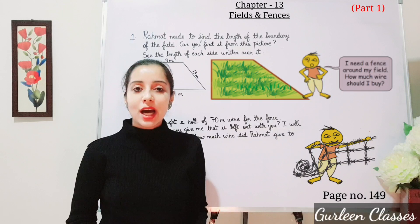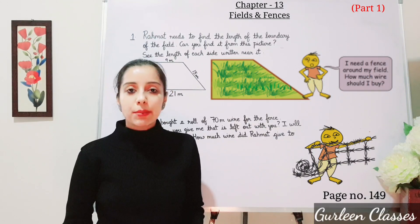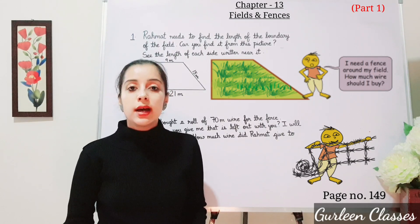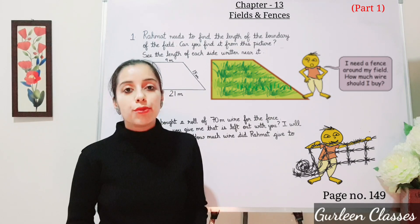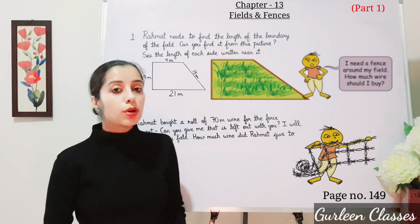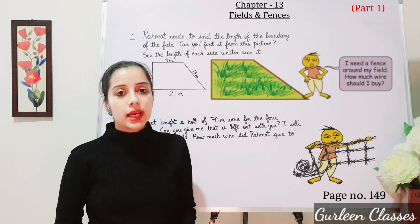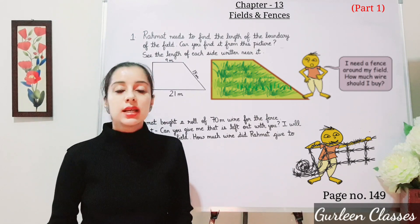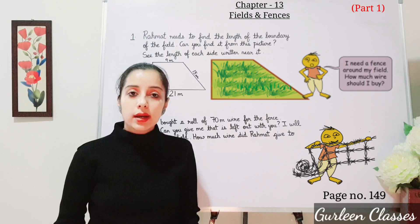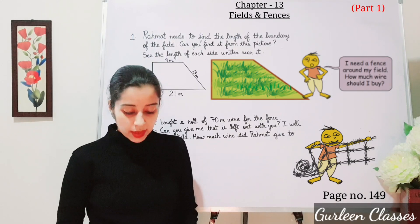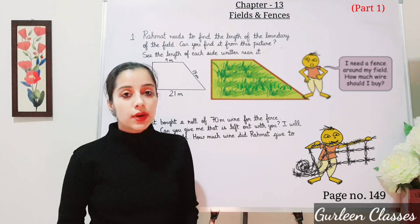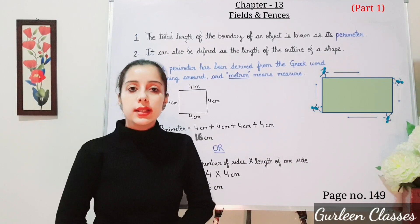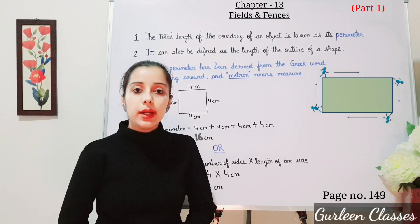Let us start with the new chapter, Fields and Fences, chapter number 13, page number 149. So now let us read together. Rehmat is a farmer. He grows wheat in his field. He is saying: I need a fence around my field. So here you can see these are the fences. Fences are made up of wood, wire, or metal to divide the field. He is wondering how much wire should I buy. In this chapter, we will be learning all about perimeter and area.